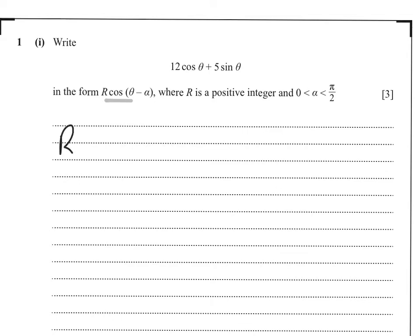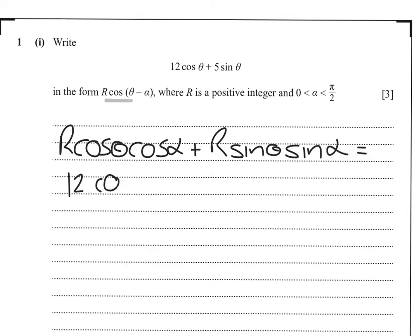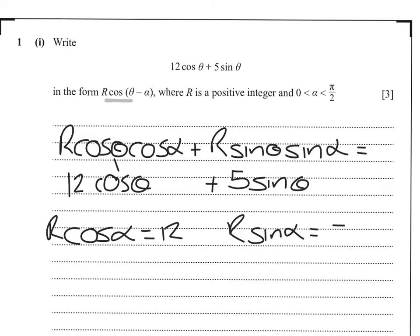So that gives us r cos theta cos alpha plus r sine theta sine alpha. And we want that to equal 12 cos theta plus 5 sine theta. Equating coefficients, that gives us that cos alpha times r equals 12 and r sine alpha equals 5.